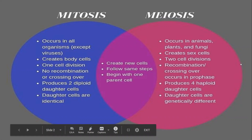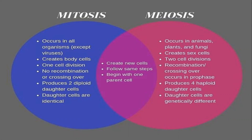Meiosis, on the other hand, is entirely different. It only occurs in animals, plants, and fungi. Its function is to create sex cells specifically — sperm and eggs. In opposition to mitosis, instead of just one cell division, there are two that go through to produce the sex cells. There is recombination and crossing over of genetic material that occurs during one of the prophases. The products of meiosis are four haploid daughter cells that are genetically different from one another and from the parent. But they do follow the same basic steps, each starting with one parent cell, and their function is to create new cells.